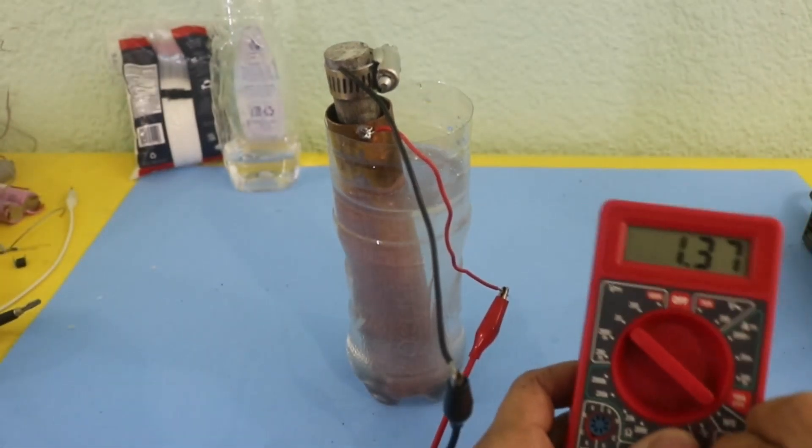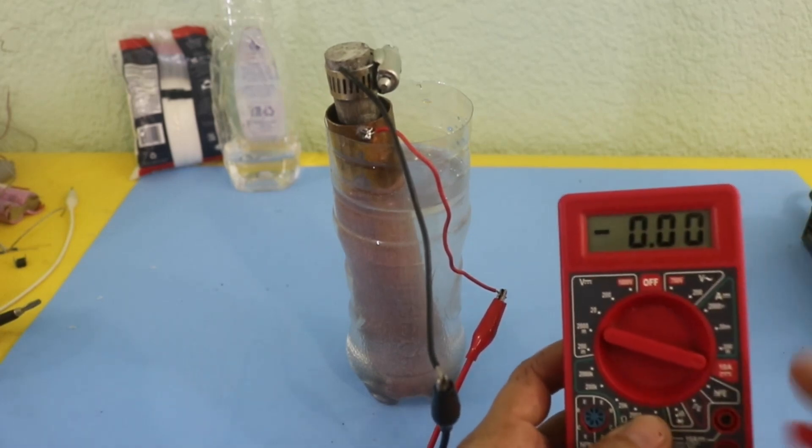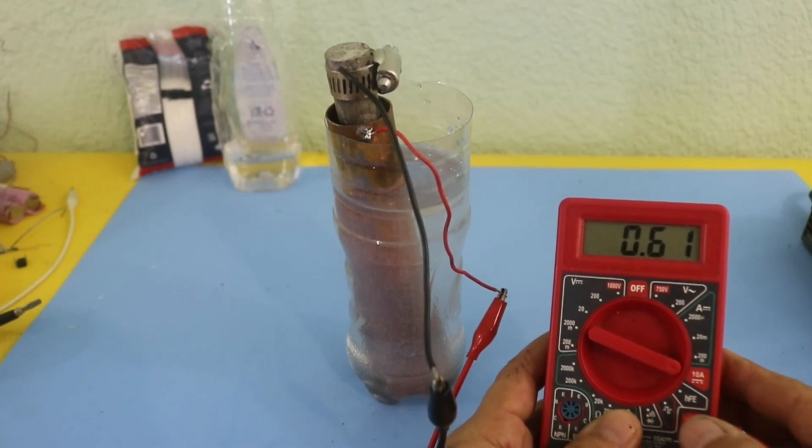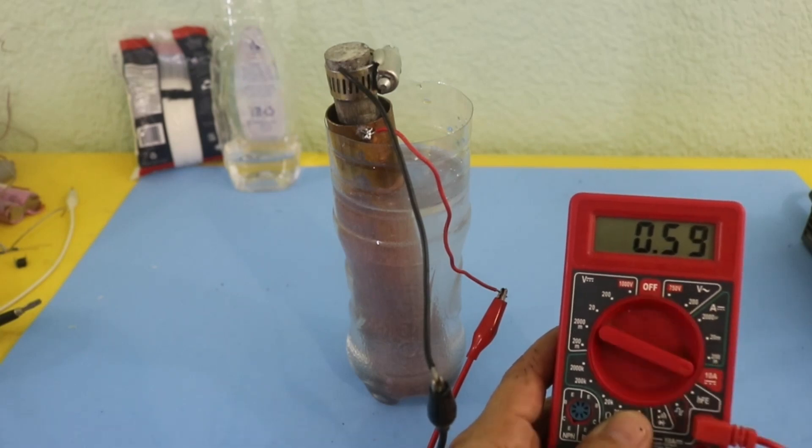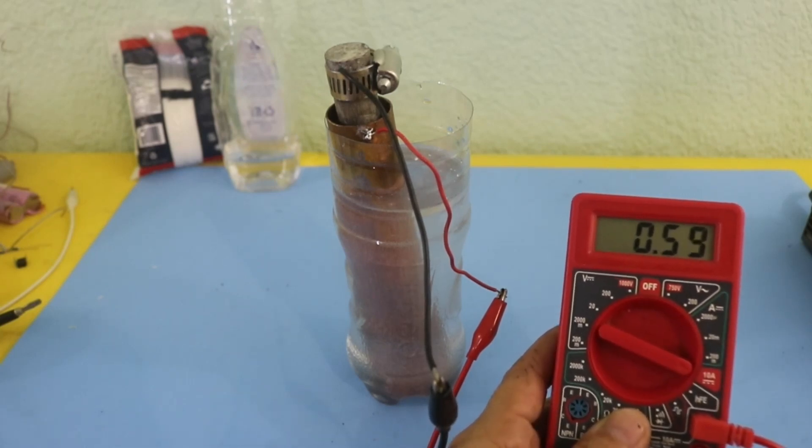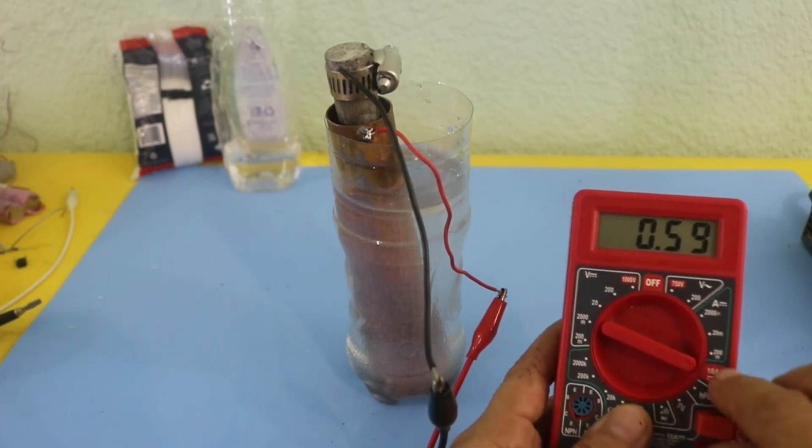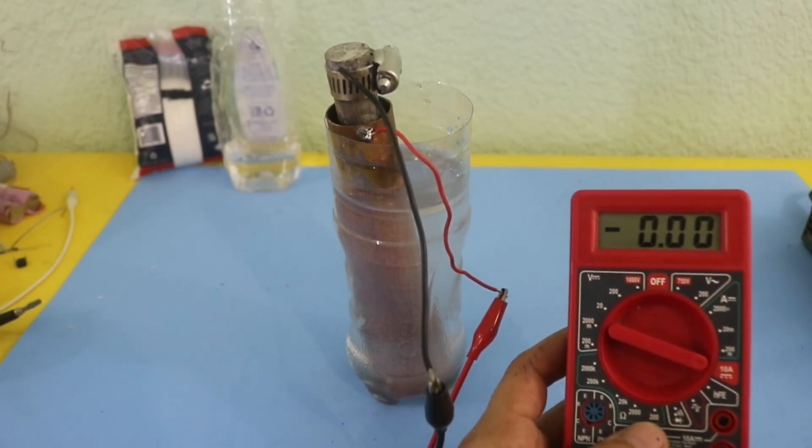Now let's check the short circuit current, and 0.6 amps. You can see that the current is constant, it is not going down as in the previous case with the electrolyte of salt water.